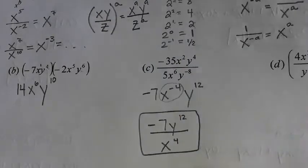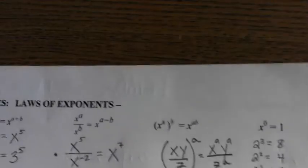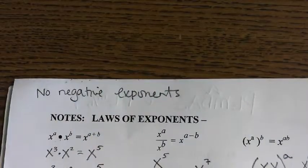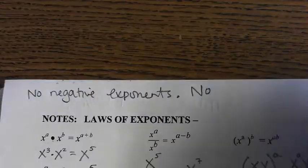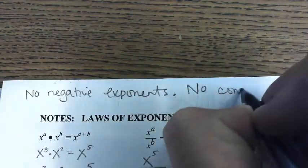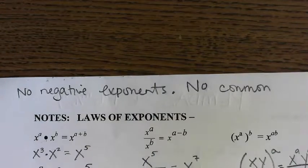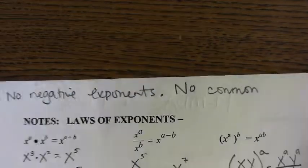And keep in mind that when things are fully simplified. And you should write this at the top. You should have no negative exponents in your final answer. This is how you'll know in an open response that it's completely done. No negative exponents. No common bases. So, no variable essentially. No variable can show up more than once.